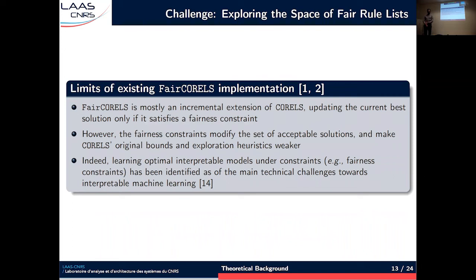The limitation of our first version of Fair Corels is that it was mainly an incremental extension of Corels, where the search is performed in almost the same way. The only difference is that before updating the current best solution, we checked whether the candidate solution satisfies some fairness constraints, and if it doesn't, we don't perform the update. However, enforcing fairness constraints modifies the set of acceptable solutions, making the exploration of the prefix tree considerably more difficult. More generally, the problem of learning optimal interpretable models satisfying constraints such as fairness has been identified as one of the main technical challenges towards the development of interpretable machine learning.